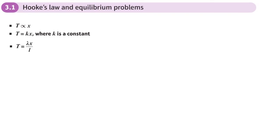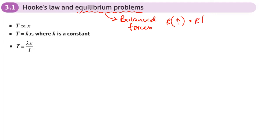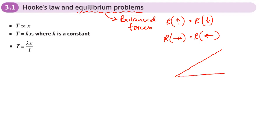This is the first section of Chapter 3 from the Further Mechanics book: elastic springs and strings. Here we're going to be looking at Hooke's Law and equilibrium problems. If things are in equilibrium then we're looking at balanced forces, so that means we're probably going to be resolving forces — maybe horizontally, maybe vertically, or on a slope where forces in each direction are balanced.